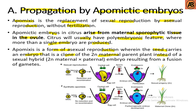Instead of a sexual hybrid embryo resulting from a fusion of gametes. Here in the picture we can see that the first picture is the sexual progeny and the second picture is apomyxis, which occurs without fertilization.